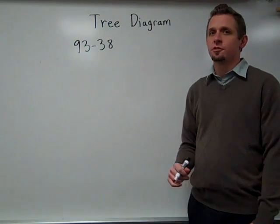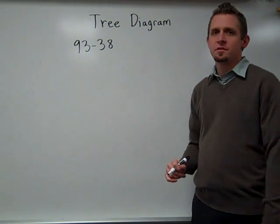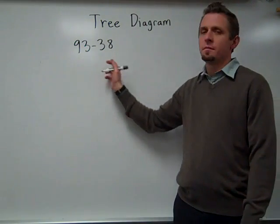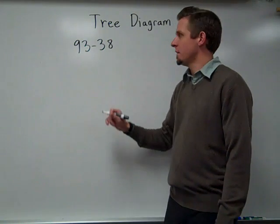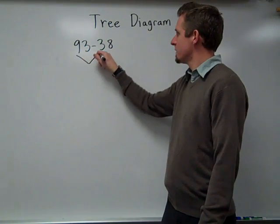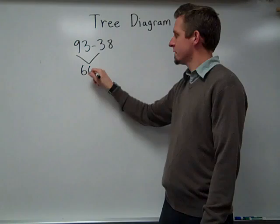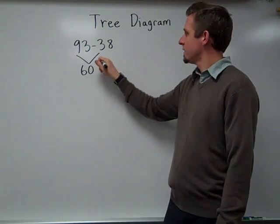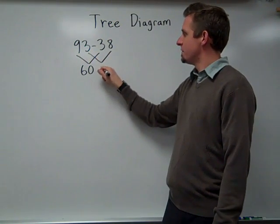The first strategy is called tree diagram. The way a student would solve the problem 93 minus 38 is like this. 90 minus 30 is 60. 3 minus 8 is negative 5.